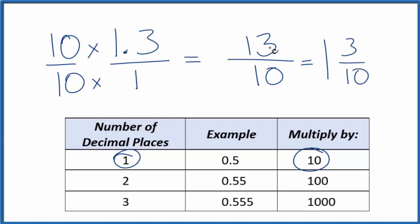Both of these, 1 and 3 tenths, 13 over 10, and 1.3, they're all equal. They're the same value, just written a different way.